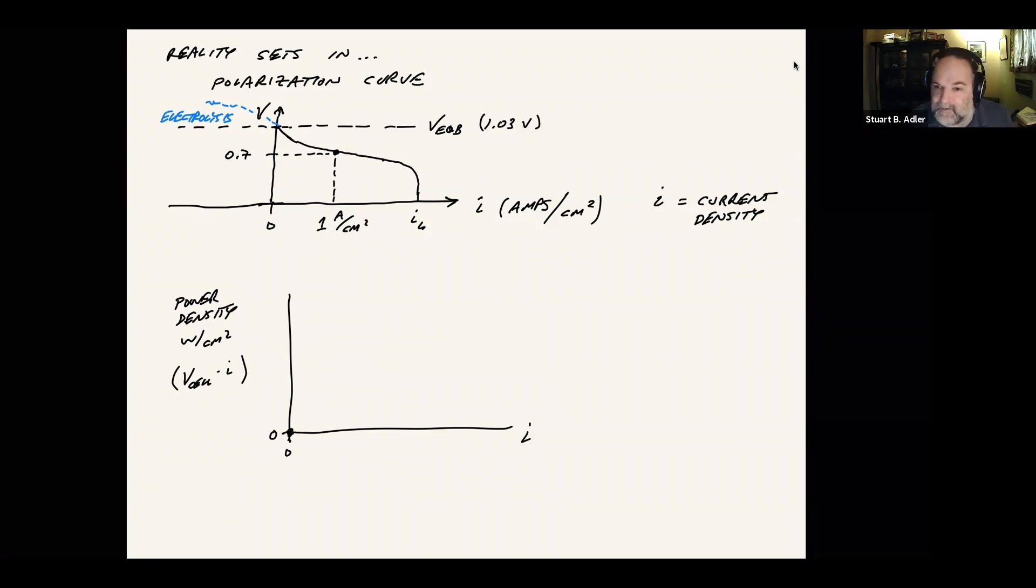On the other hand, if we go to the limiting current, we also get zero because there we're passing a current, but we don't have any voltage. So voltage times current is zero there as well. And then in between, we're going to see some type of positive maximum. Looks like whatever it's going to look like. I'm just drawing it as a kind of an inverted circle, but in general, it'll be some function that will be asymmetric and we expect a maximum power somewhere. So this is the point of maximum power density.